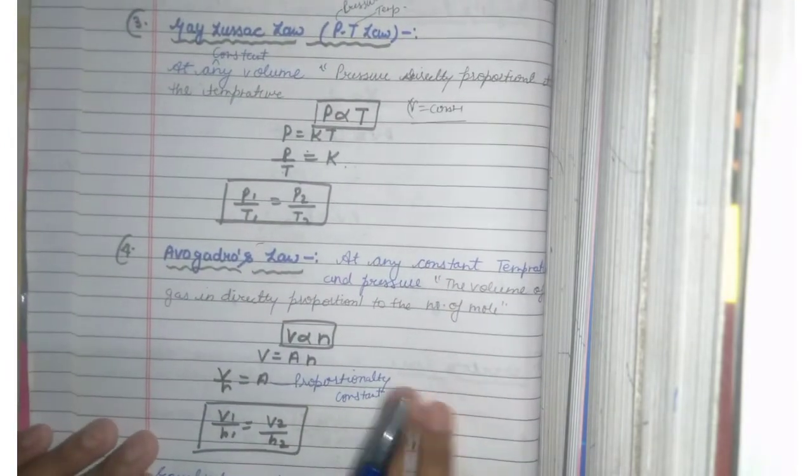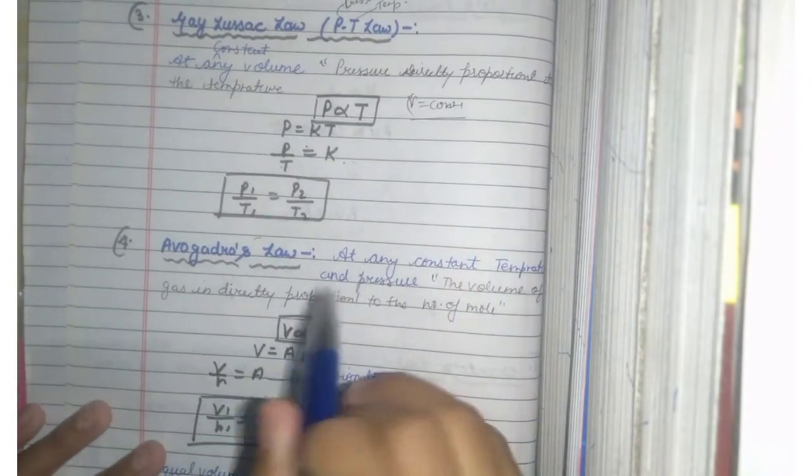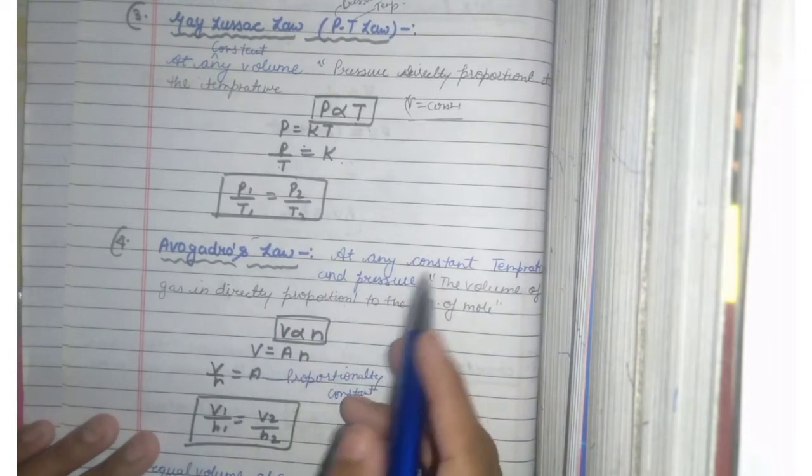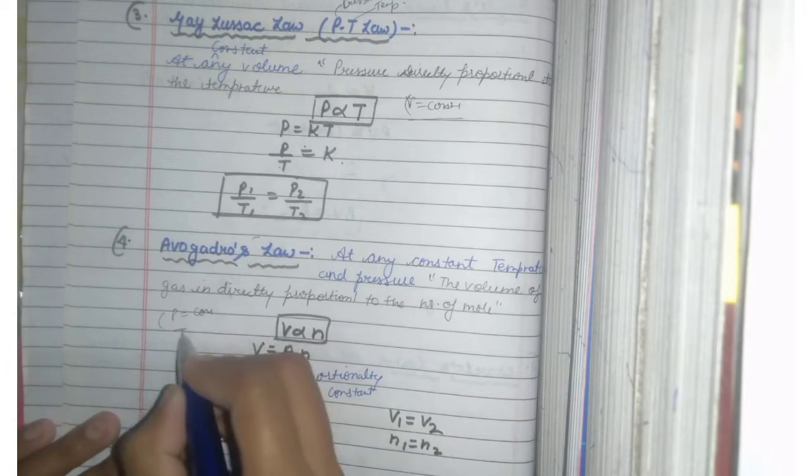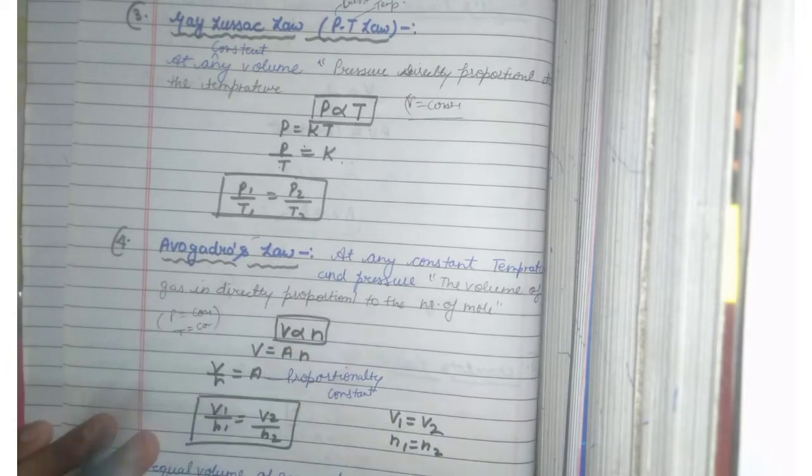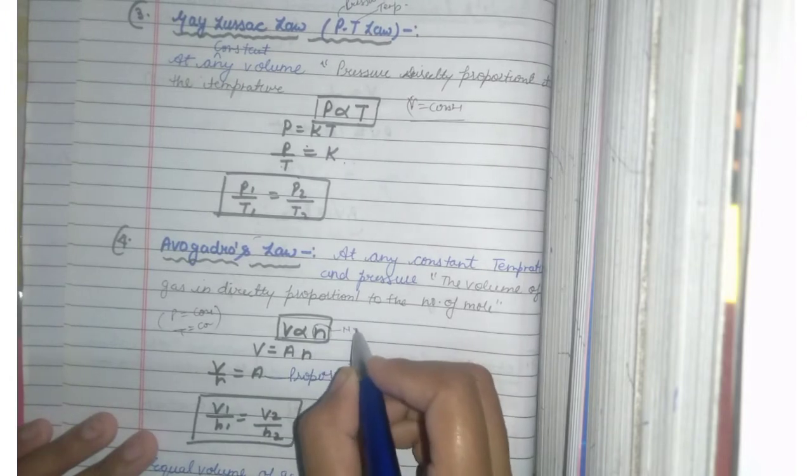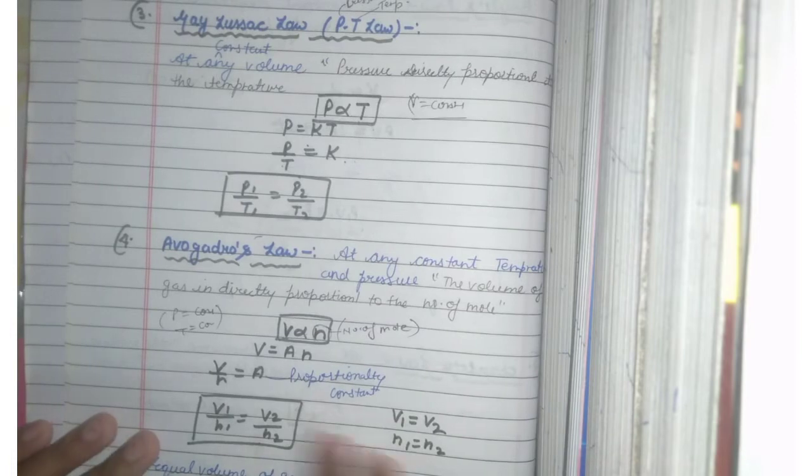The last and fourth law is Avogadro's Law. At any constant temperature and pressure, the volume of gas is directly proportional to the number of moles. First we take pressure constant and the other we take temperature constant. When we take constant, the volume is directly proportional to the number of moles.